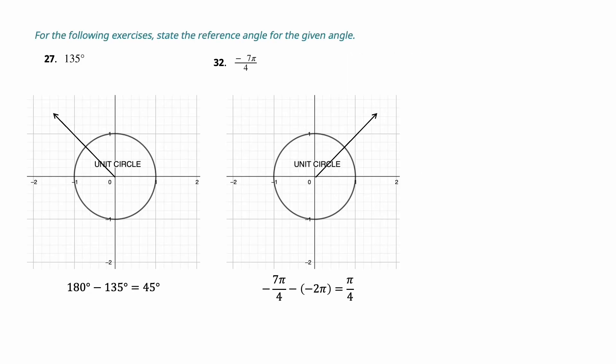For the following exercise, state the reference angle for the given angle 135. Like I was saying, if it's in the second quadrant, all you do is subtract the angle from 180 and you get reference angle 45. If you want to find the sine and cosine of that: cosine is going to be negative, sine is going to be positive.